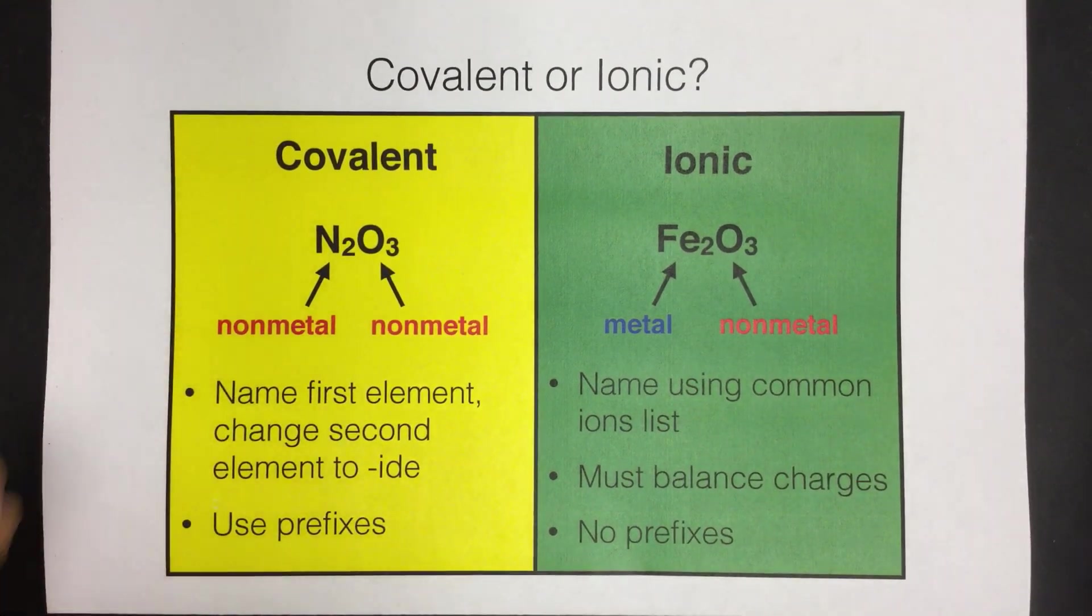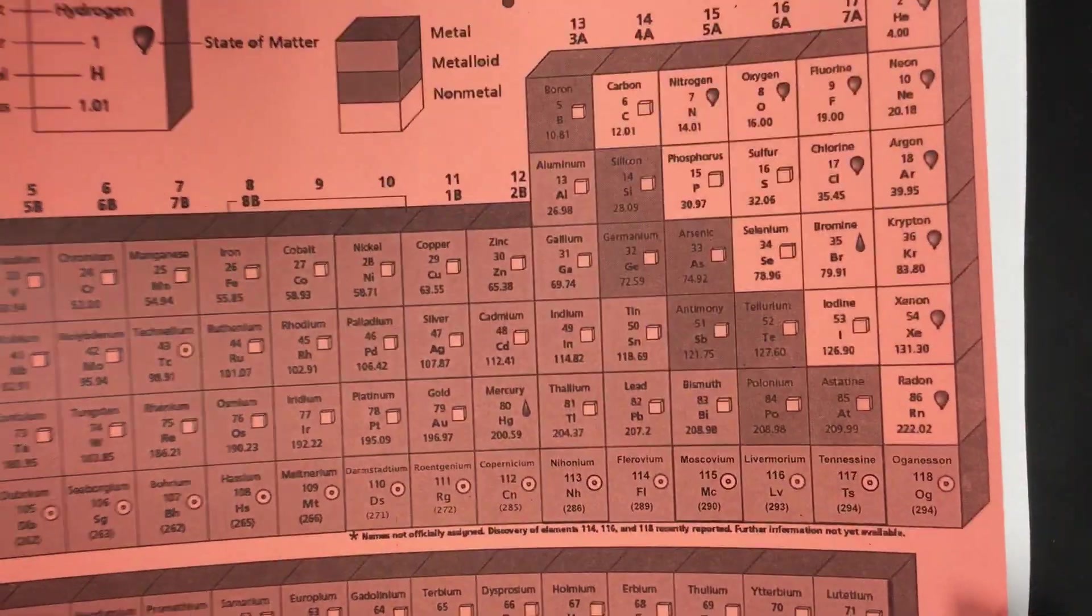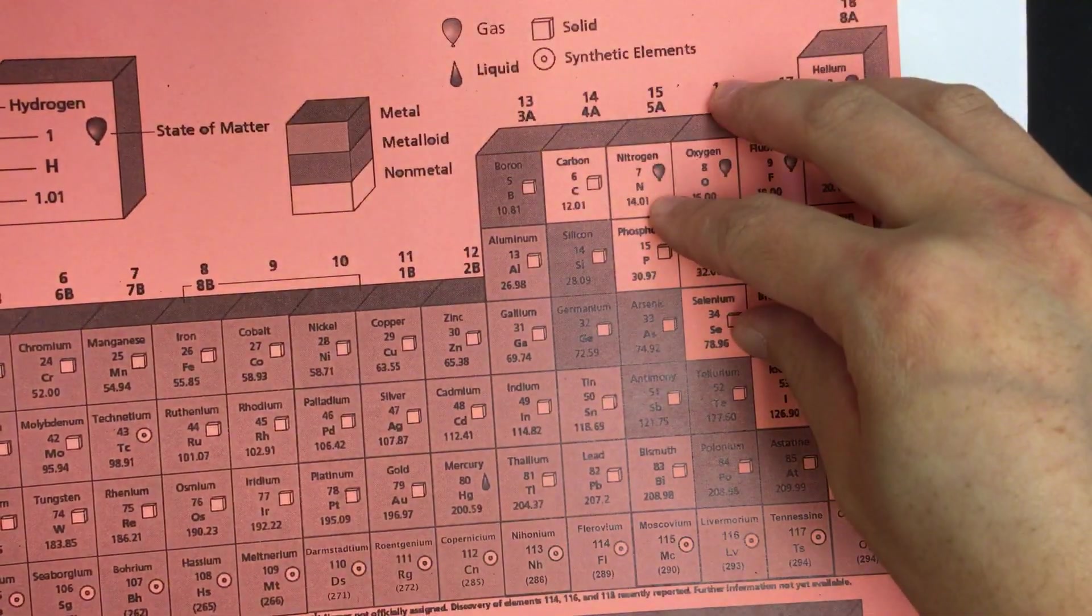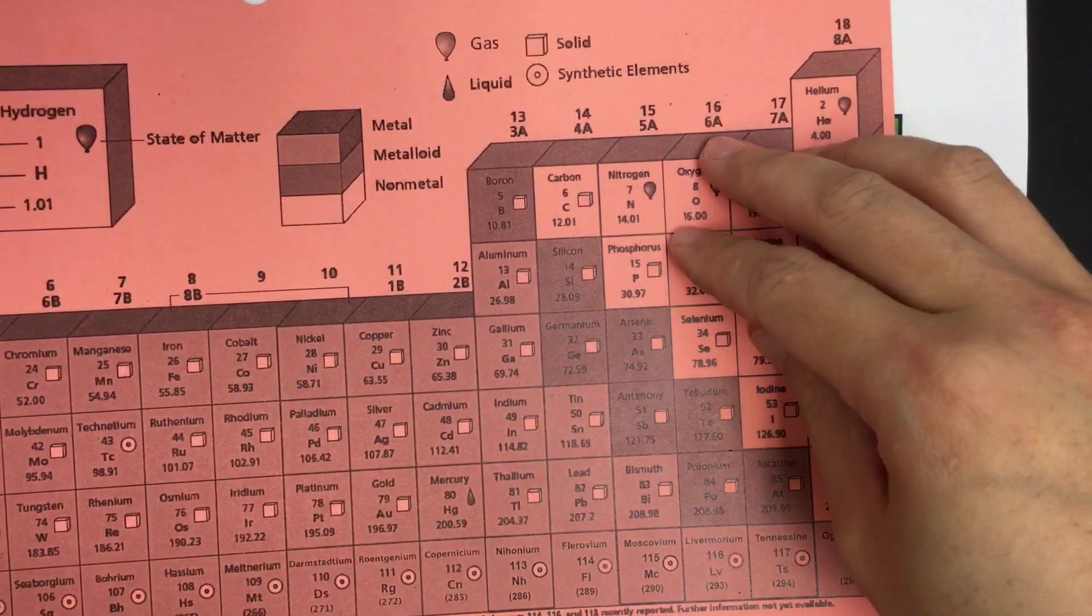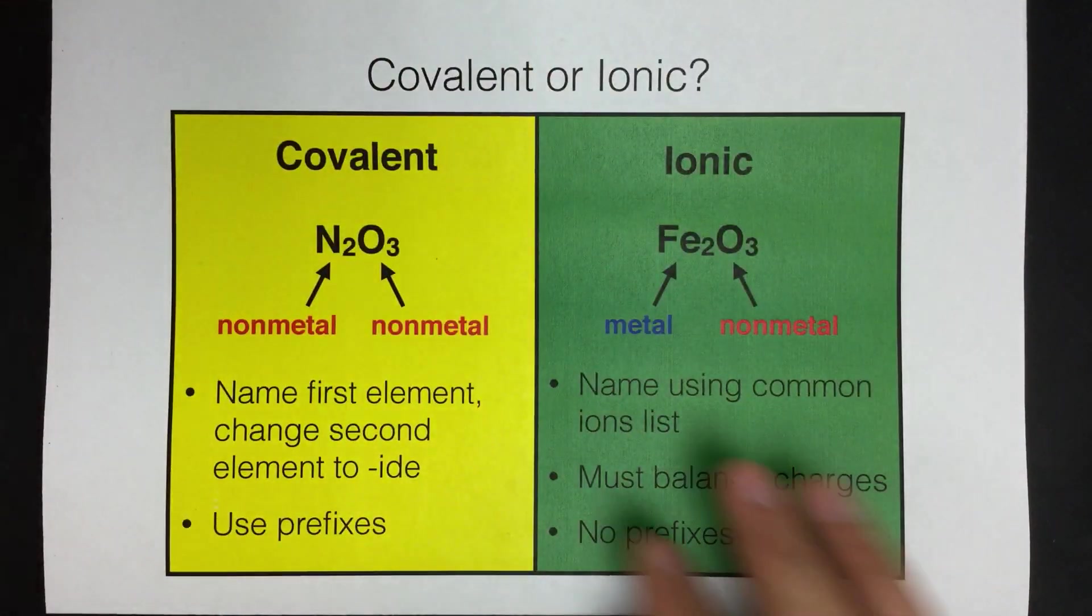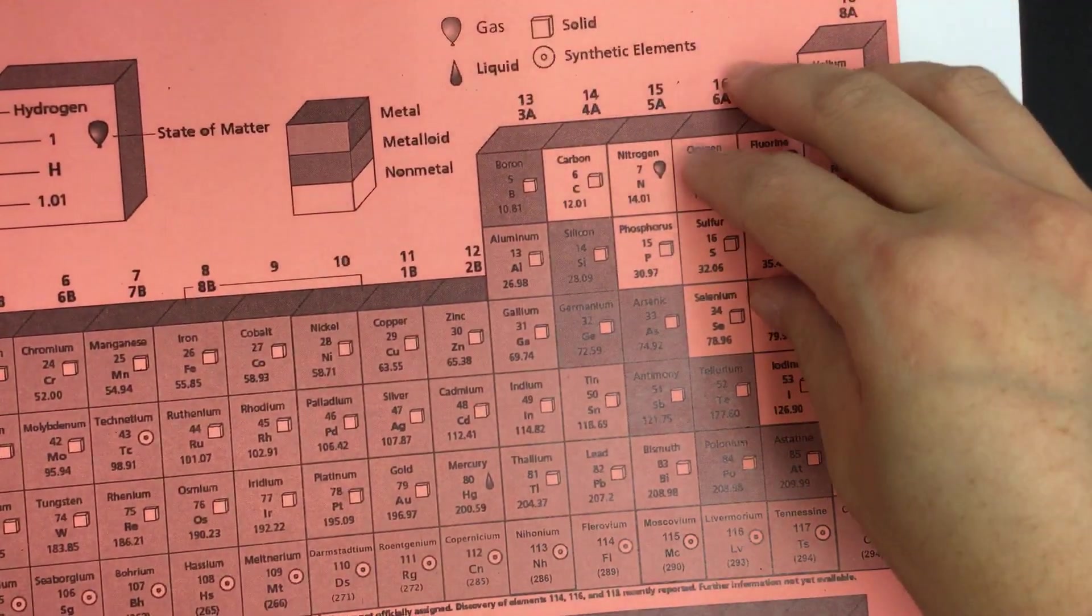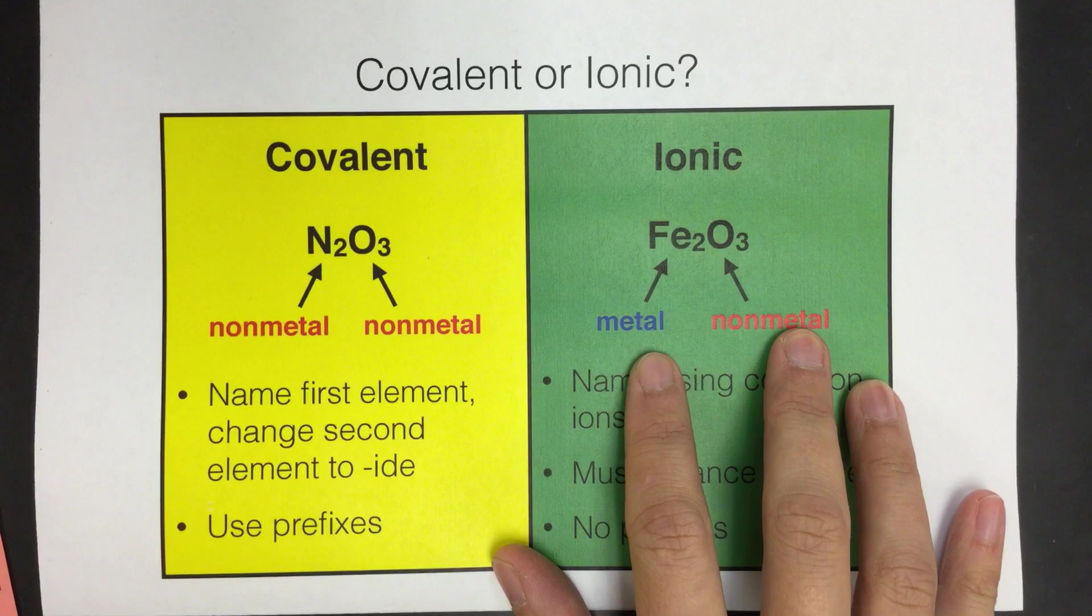So just to remind ourselves the difference between metals and non-metals, remember you can use your periodic table. The staircase divides the periodic table into non-metals on this side and metals on this side. So if you have two things from this part of the periodic table, that would be two non-metals and it would be a covalent compound. If you have one thing from this side and one thing from the metal side of the periodic table, it's going to be an ionic compound.